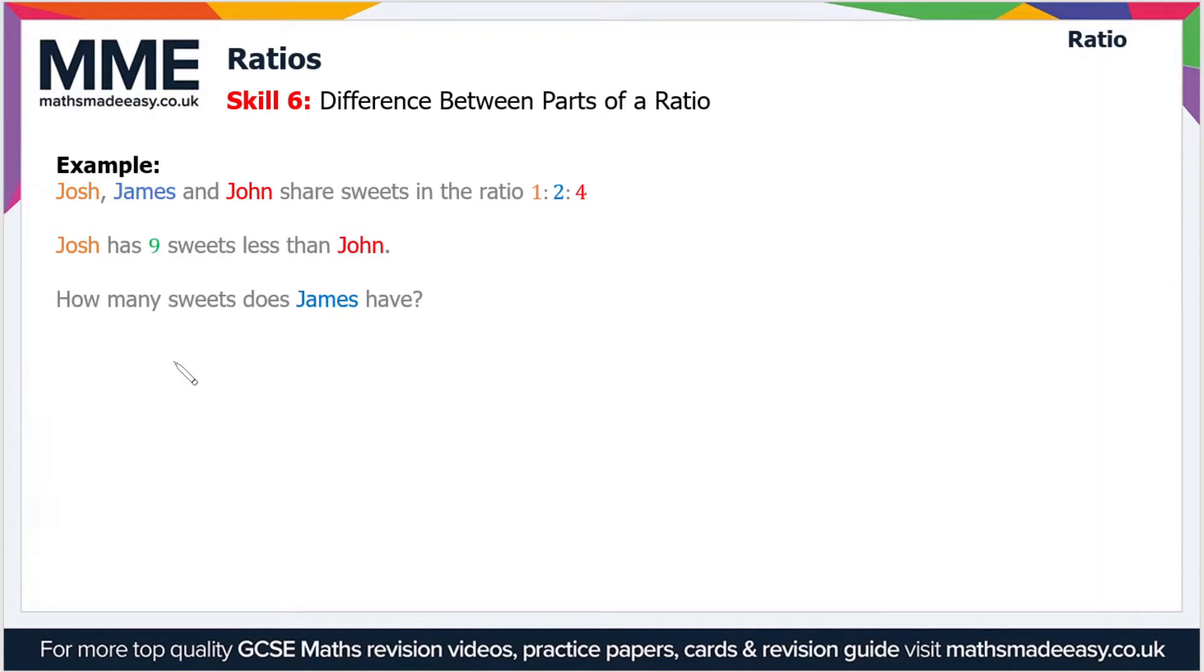How many sweets does James have? To work this out, we have to find the value of one part in terms of the number of sweets, then multiply that by the number of parts that James receives. If Josh has 9 sweets less than John, and Josh has 1 part and John has 4 parts, then the difference in parts is 4 - 1, so 3 parts equals 9 sweets.